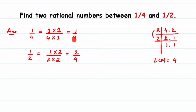Now the denominators are the same. We look at the numerators: we have 1 and 2. There's not much gap — 1 and 2 are consecutive numbers with no counting number between them. In such a case, since they're asking for 2 rational numbers, we take 2 plus 1 equals 3, and multiply both numbers by 3 in numerator and denominator.